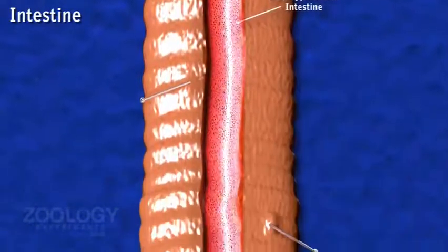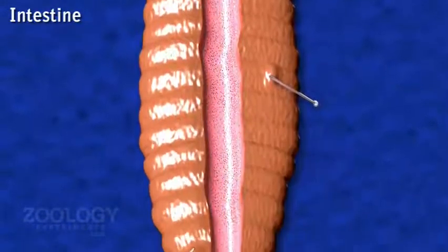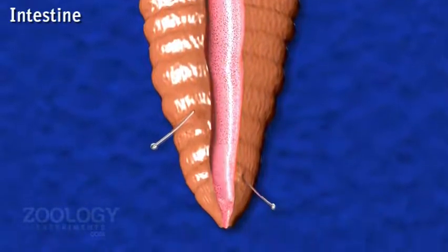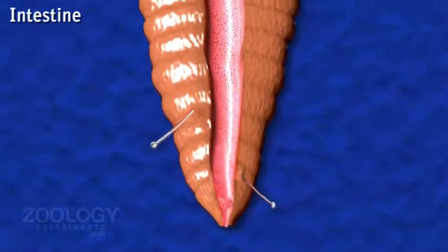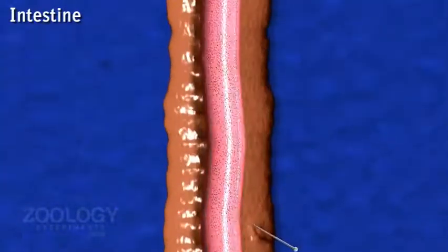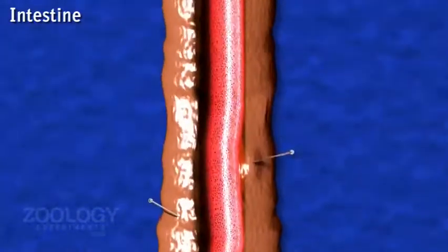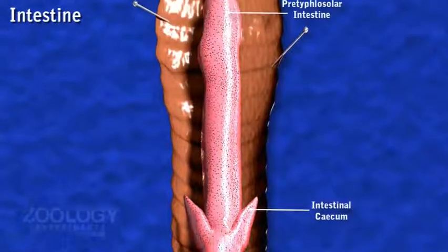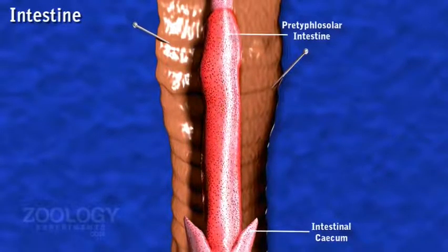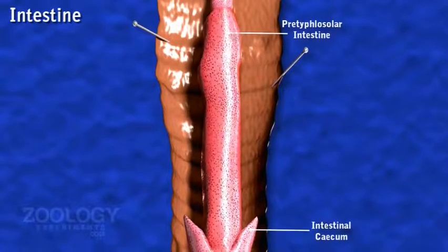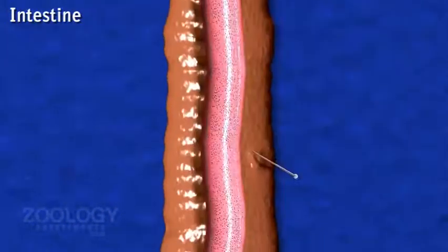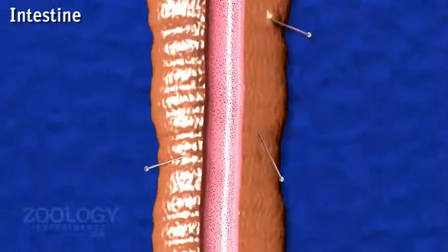Its internal lining is ciliated, folded, vascular and glandular. The intestine is divisible into three parts: number one, pre-typhlosole region; number two, typhlosole region; number three, post-typhlosole region.